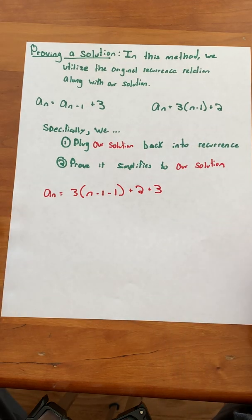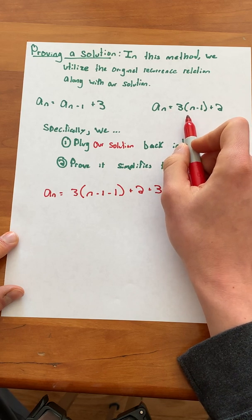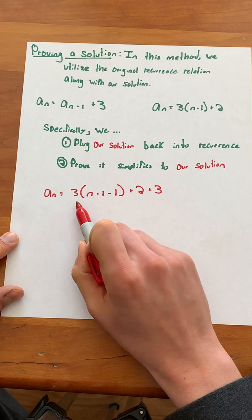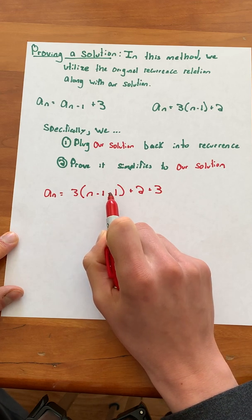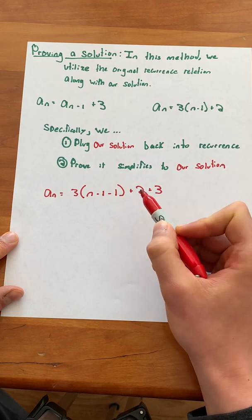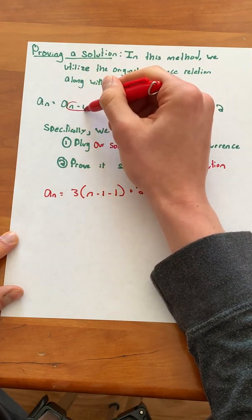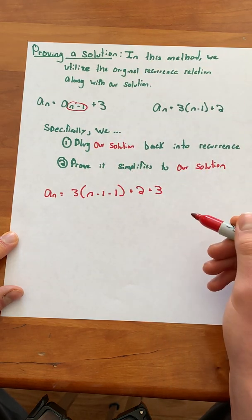So a few important things to note here. In our solution we had 3 times (n minus 1) plus 2. Down here when we've plugged in we have 3 times (n minus 1 minus 1). Where did that extra minus 1 come from? Well, that comes from the fact that we had a of n minus 1 in our recurrence relation. So we plugged n minus 1 in for n.